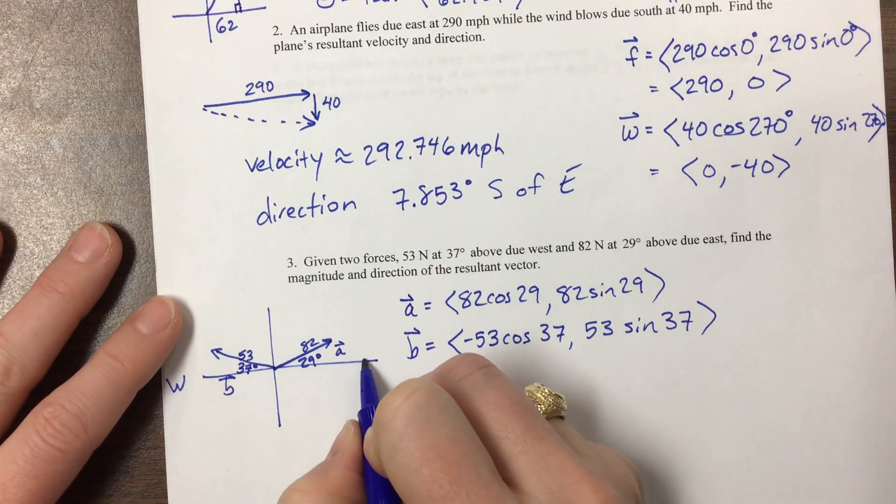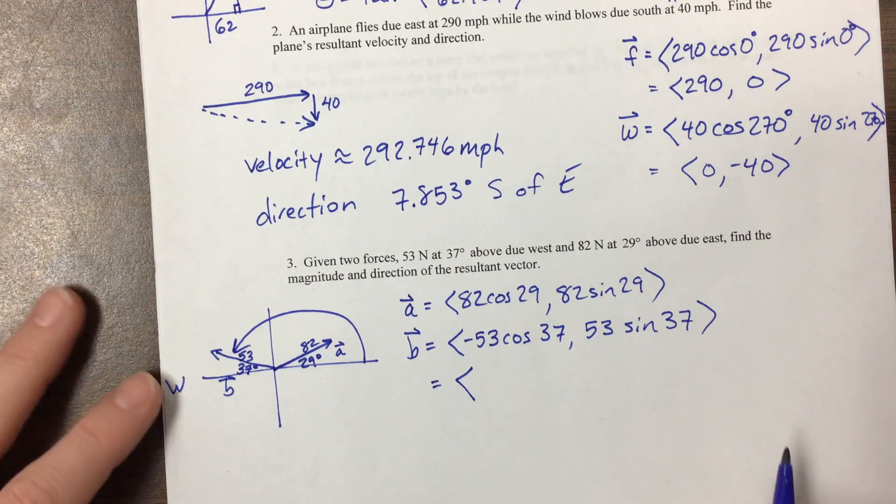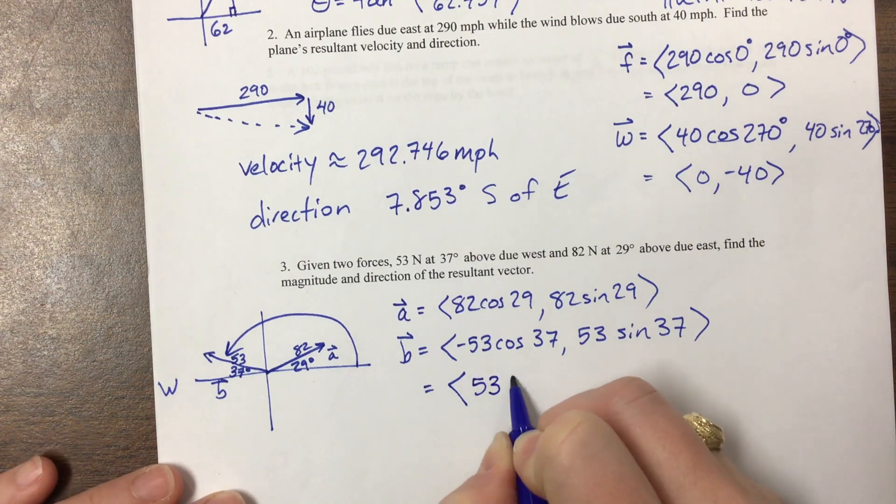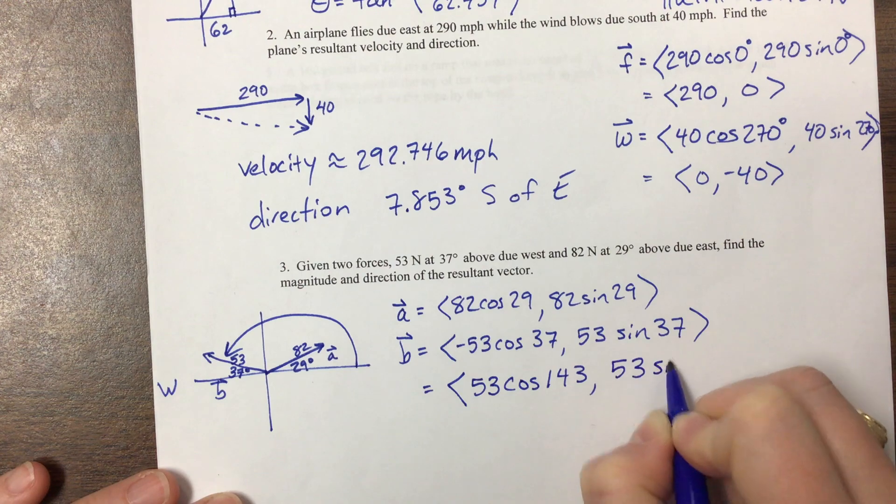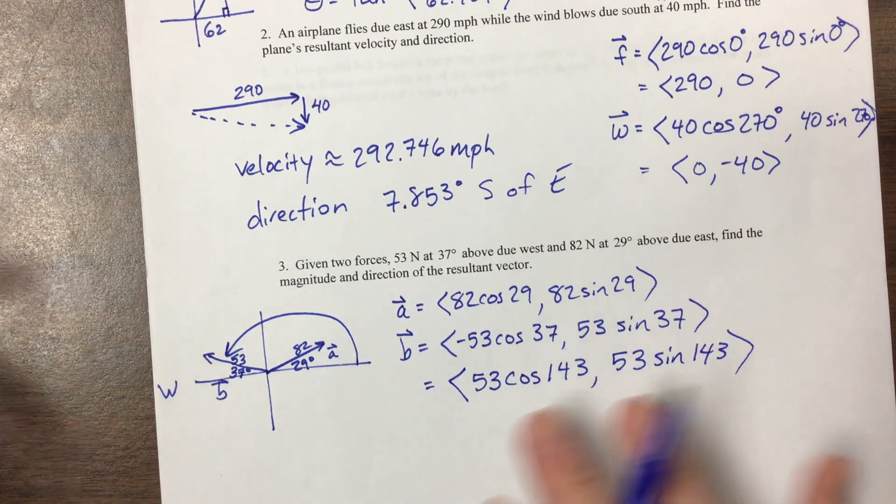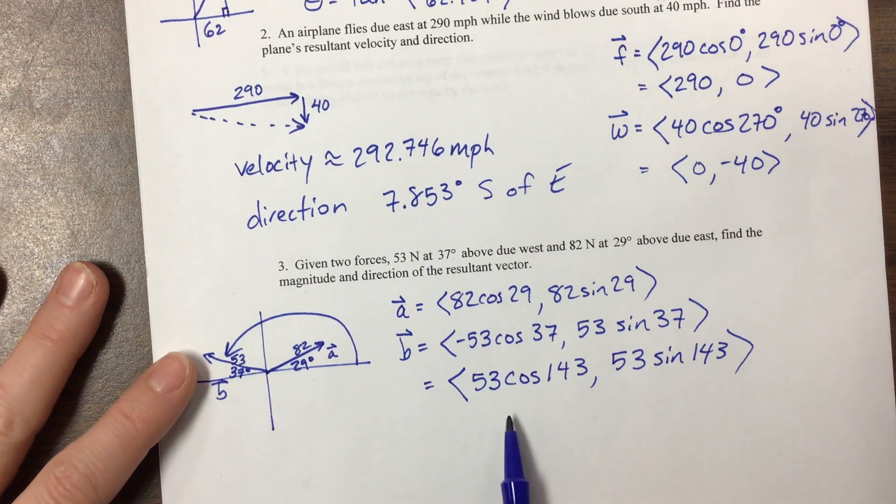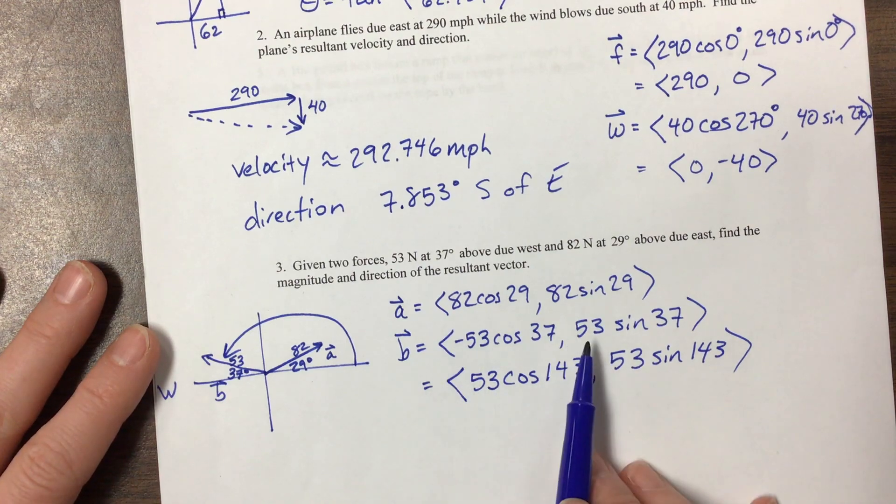So what I would do is think, from here to here, what is that? Well, 180 minus 37 is 143. So I would prefer, these things end up being the same because of how sine and cosine work on the unit circle and all that kind of stuff. But I would do this so that you don't have to think through, where does a negative go? Does that make sense?